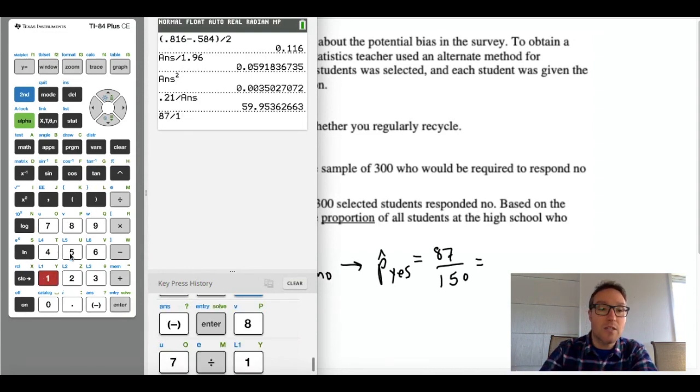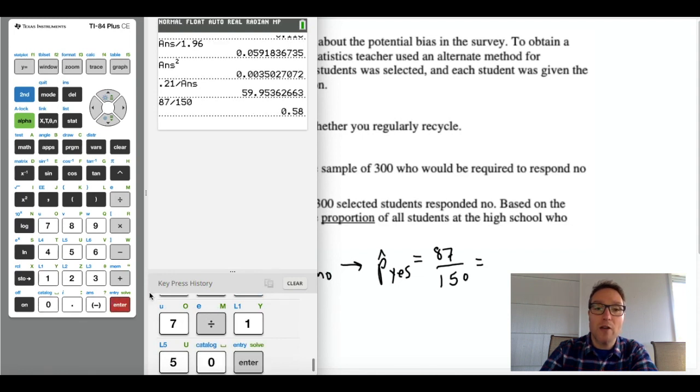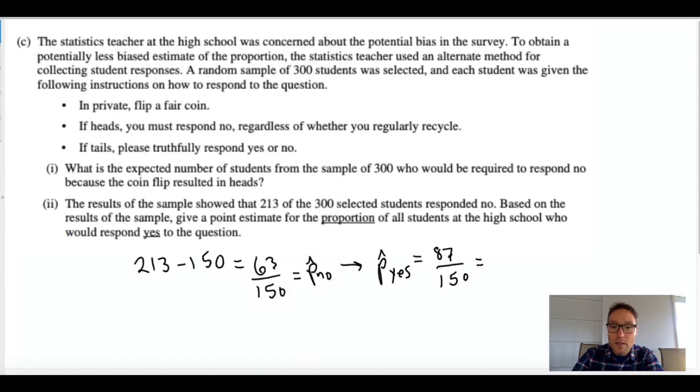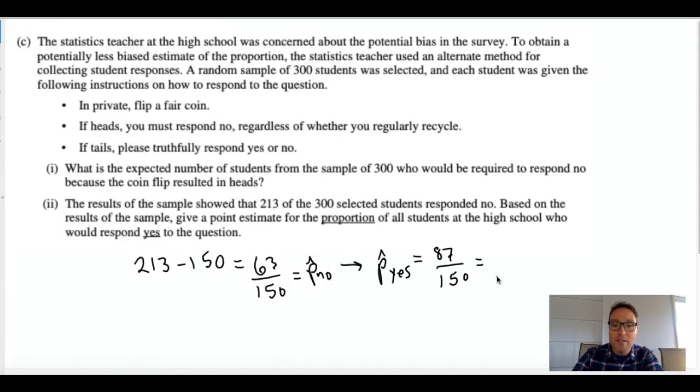0.58 is the proportion of yeses that we would expect. That's our point estimate for the truthful yeses.